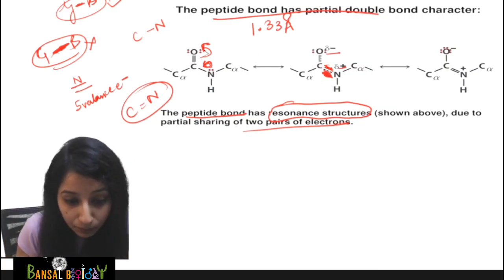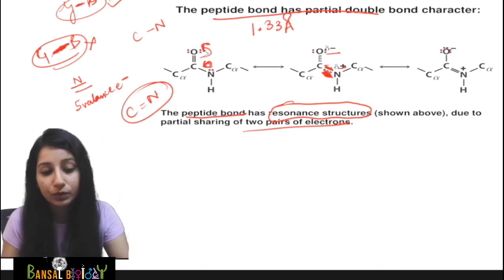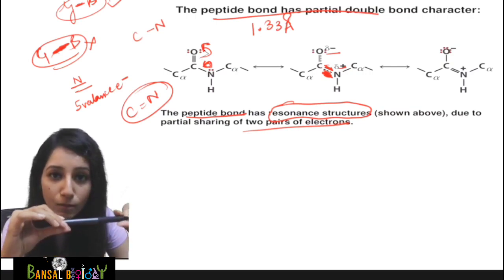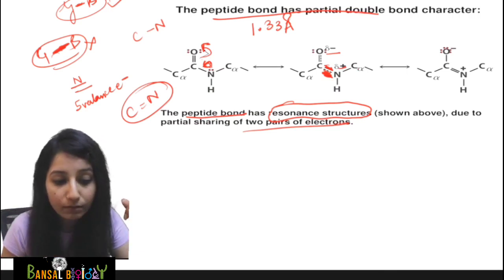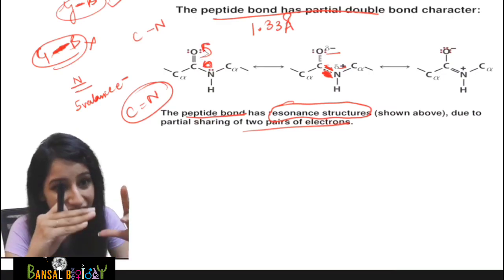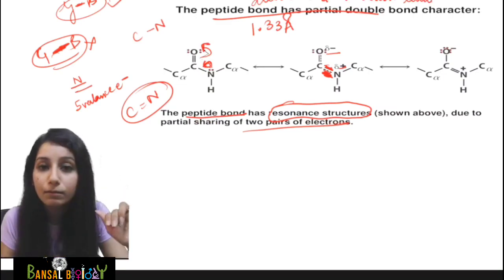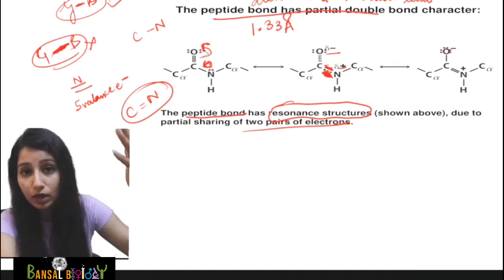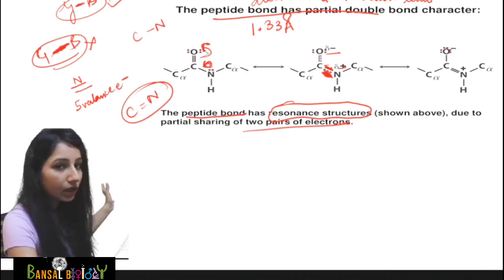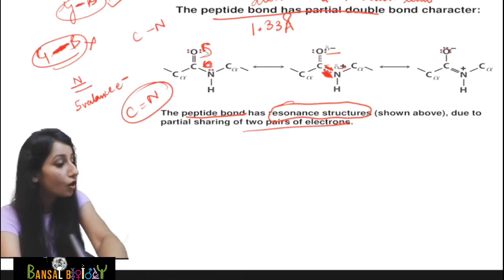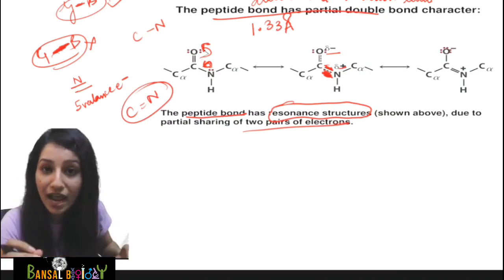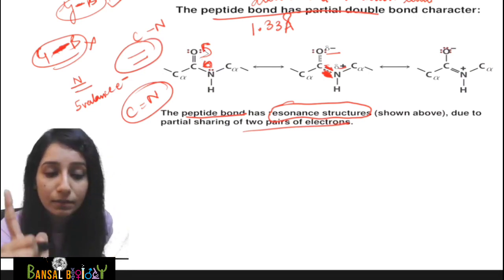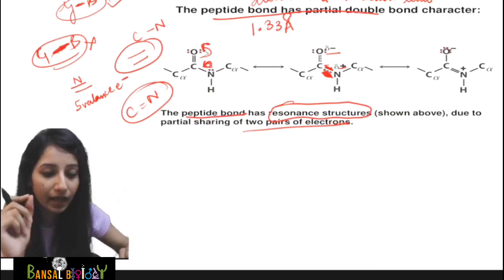Now let's move forward. When this double bond is formed between carbon and nitrogen, the double bond will not be able to rotate easily. If only a single bond is present, rotation is very easy. But the double bond limits the rotation. As a practical example, hold something with one hand — you can rotate more freely. But with two hands, rotation is very restricted. So double bond is limiting the rotation. Just remember this line very well — it will be very important in the Ramachandran plot.